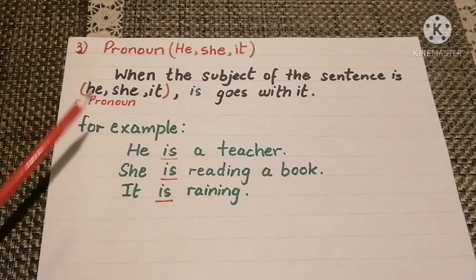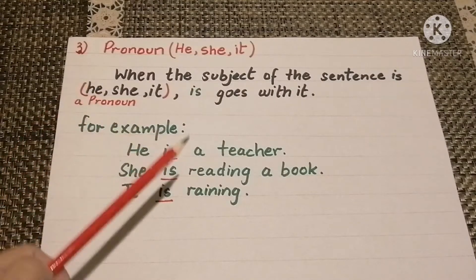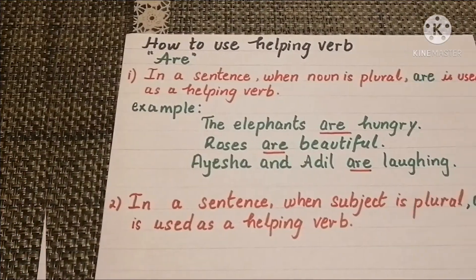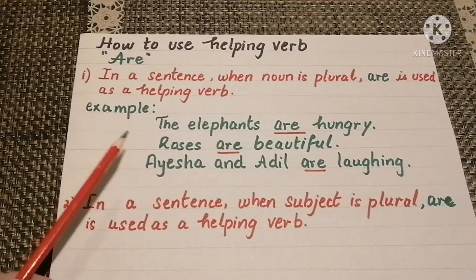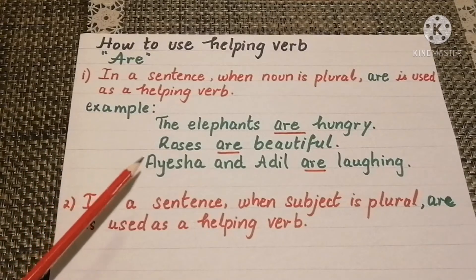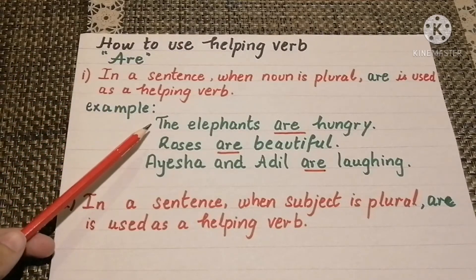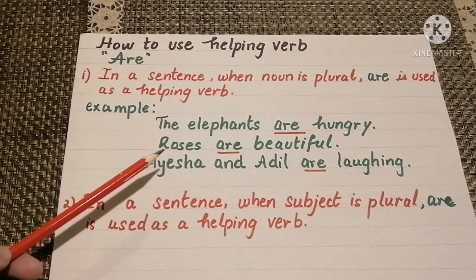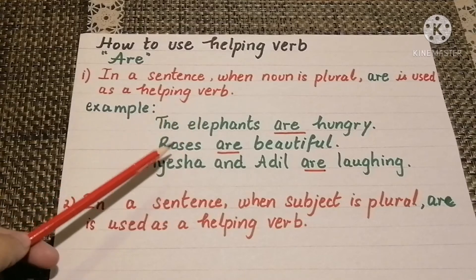Here the subject of the sentence is 'he,' therefore we have used 'is.' Now, how to use helping verb 'are' in a sentence. When a noun is plural, 'are' is used as a helping verb. For example: the elephants are hungry, roses are beautiful, Aisha and Adil are laughing. In these sentences the nouns are plural: elephants, roses, Aisha and Adil.